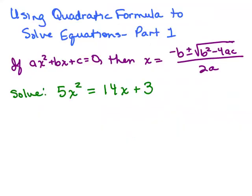This is part 1 of using the quadratic formula to solve equations. You should have already watched videos on using the square root property, completing the square, and deriving the quadratic formula. Here's the quadratic formula: if ax² + bx + c = 0, then x = (-b ± √(b² - 4ac)) / 2a.